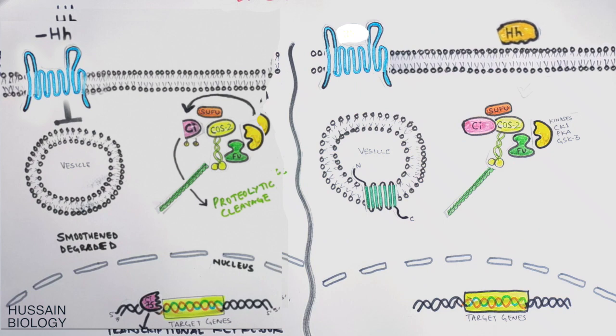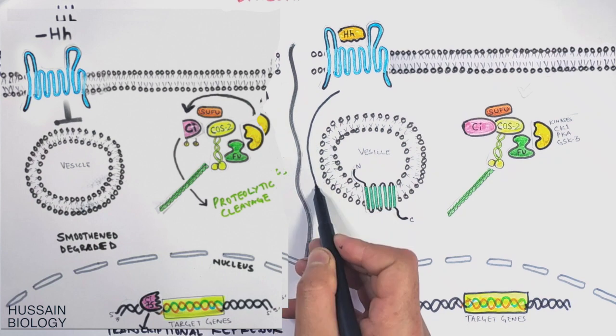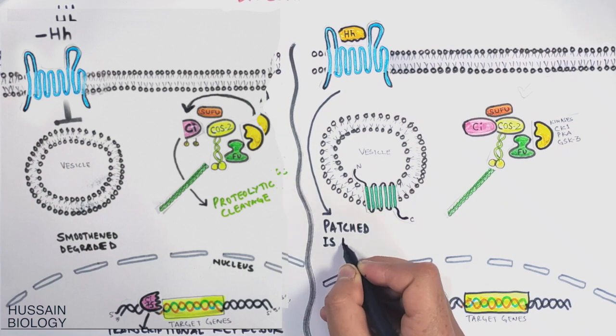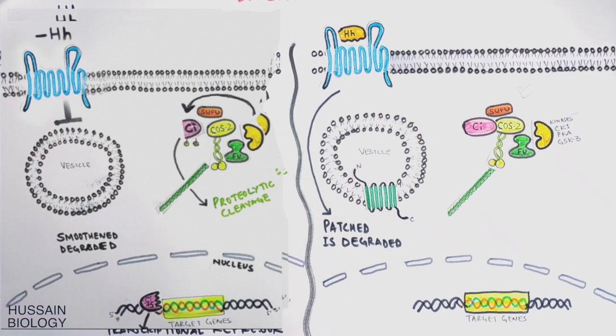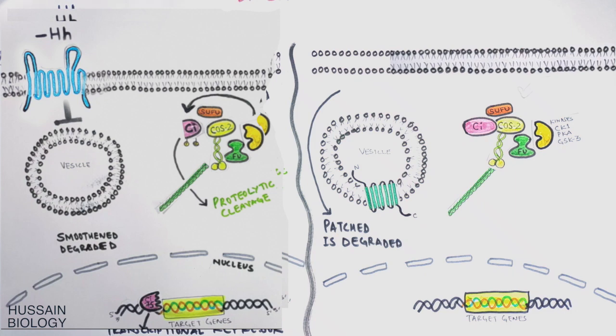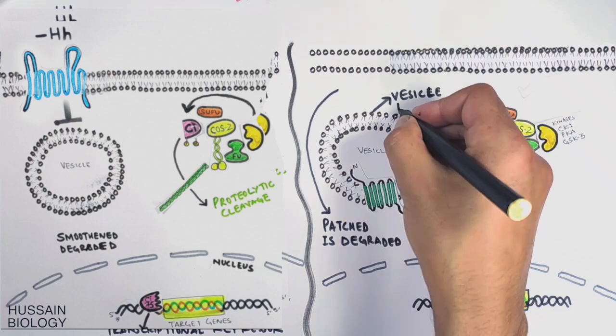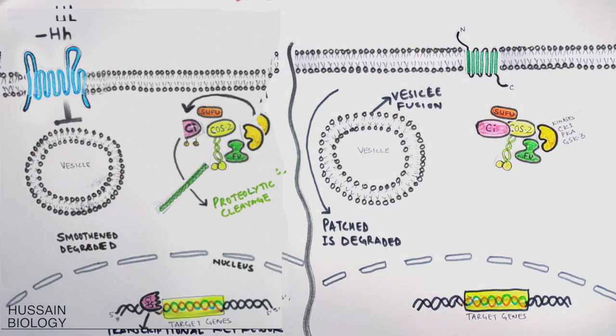Here we see the hedgehog binds to the Patched receptor outside of the cell and mediates the degradation of Patched receptor. So now the Patched protein is no more, that means Smoothened, that is Smo protein, will not be degraded. So the Smoothened protein from vesicle gets to the plasma membrane through vesicle fusion.